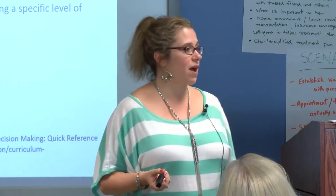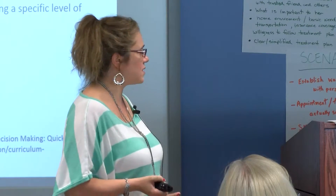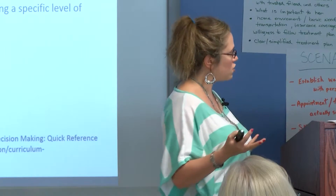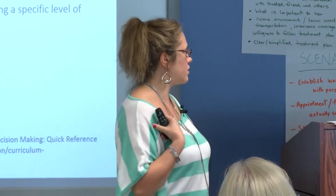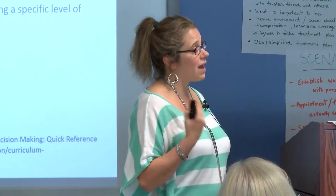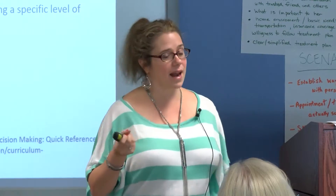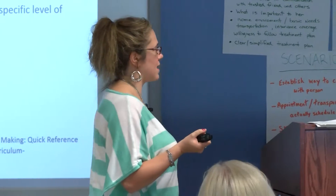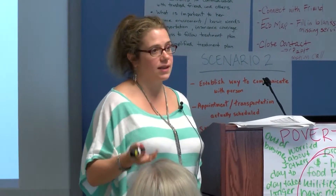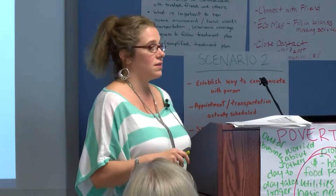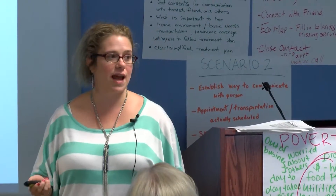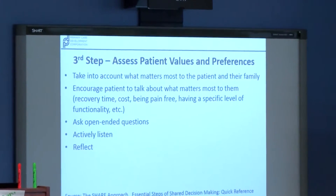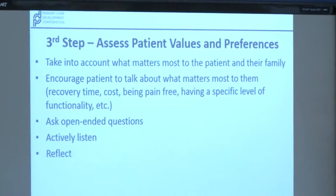The third step is really about assessing values and preferences — including the family and the larger community, whoever that is for the person. Having people talk and get at what's most important to them. Is it things like cost? How long it's going to take to recover? Having a specific level of functionality? Whatever it might be. Doing this by asking open-ended questions, actively listening and reflecting.